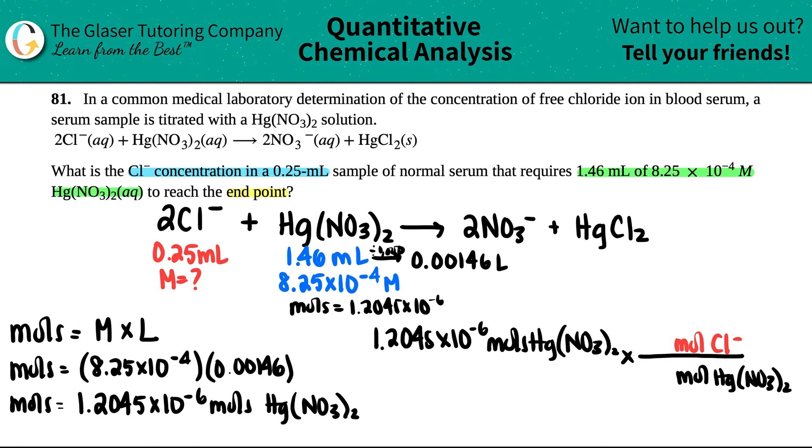This is a mole to mole ratio of different compounds. That's the coefficients. There was a 2 in front of the Cl and nothing in front of the Hg(NO₃)₂. That means you had only one of them. I'm going to put 2 moles of Cl and a 1 here. I just multiplied this number by 2. I get 2.409 times 10 to the negative six. That's the number of moles of Cl⁻ that I have.